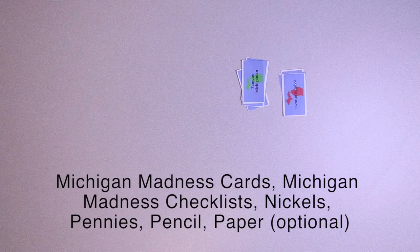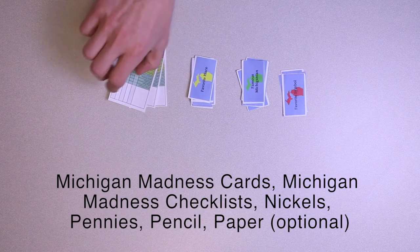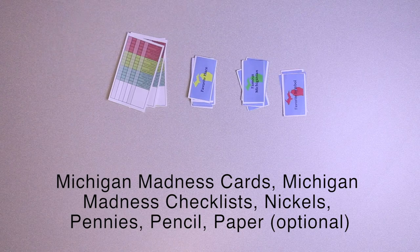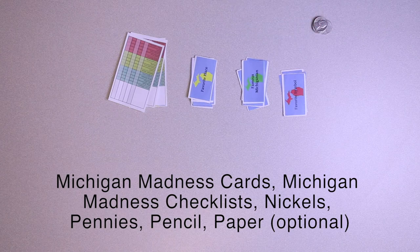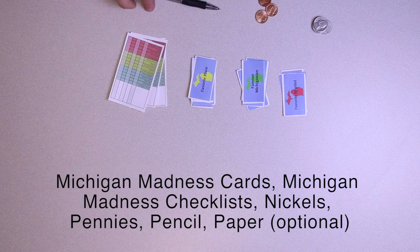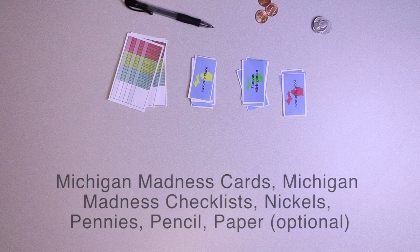To play this game, you will need to cut out and shuffle the Michigan Madness cards by category. Give each player a Michigan Madness checklist, nickel, penny, a pencil, and optionally extra paper. Each player is given three Michigan Madness cards, one of each color.